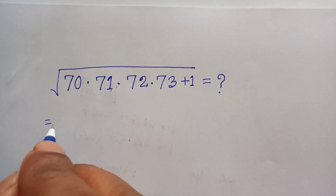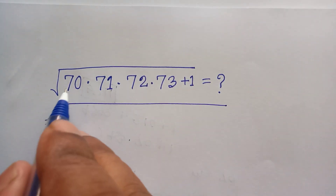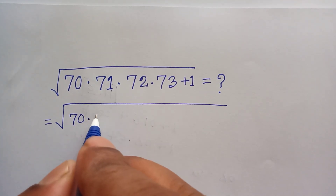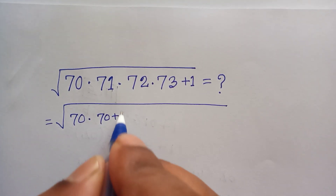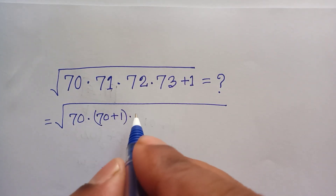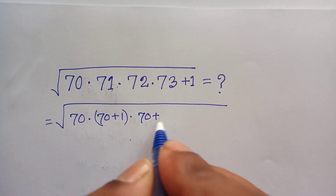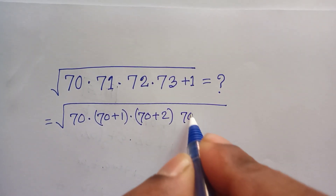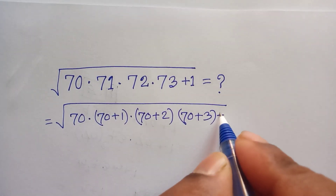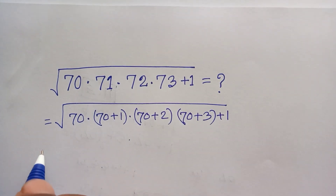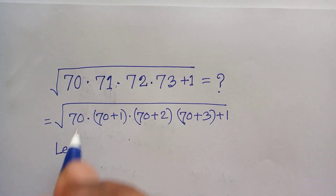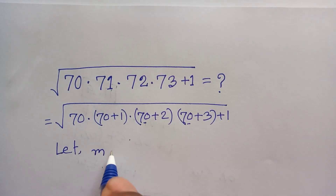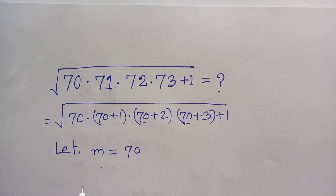Firstly, we can write under the square root: 70 times 71, which can be written as 70 and (70+1); 72 is (70+2); and 73 is (70+3). Let m be equal to 70.